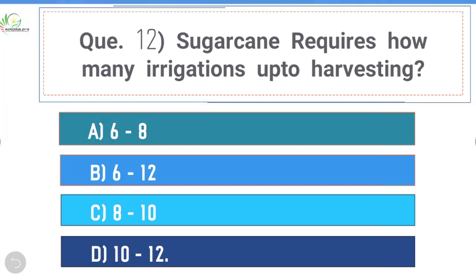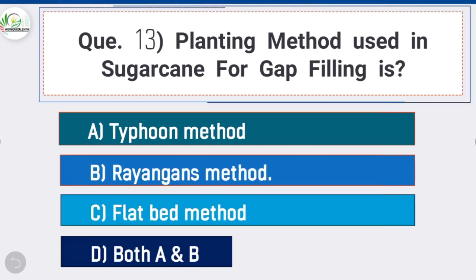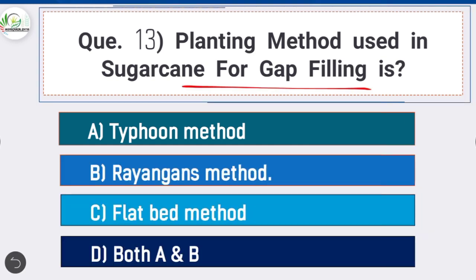Question 13: Planting method used in sugarcane for gap filling is — option B is correct: Rayangan method. Rayangan method is the Indonesian term meaning a developed cane shoot with single sprouted bud. It is costly, hence not commonly adopted in India; however, it is usually used for gap filling.